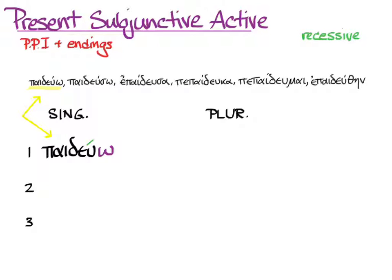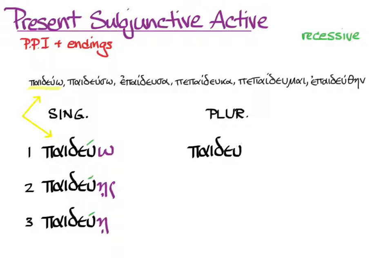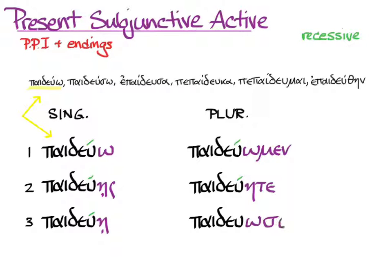Let's do the rest of the present subjunctive active forms for Paideuō: paideūs, paideū, paideūomen, paideūēte, paideūōsi. We can't translate any of those without context to tell us how to use them. That's the present subjunctive active.